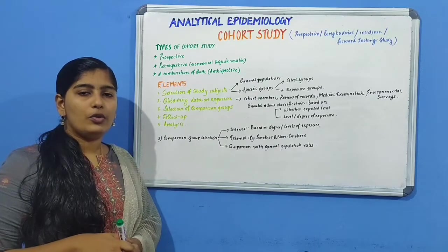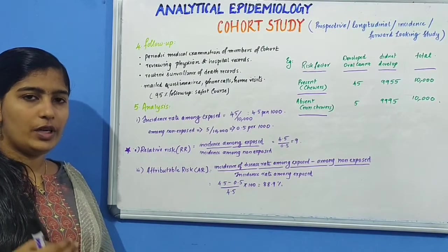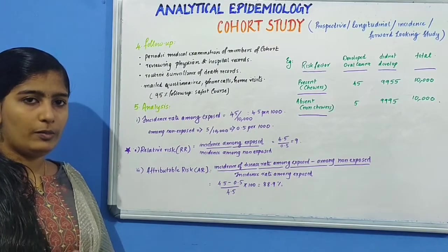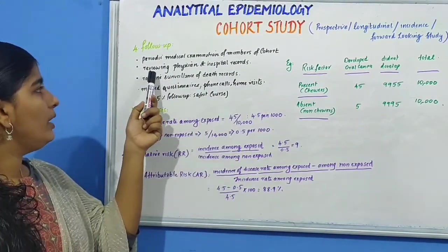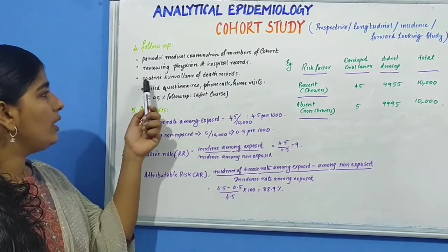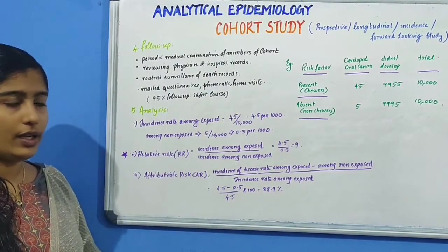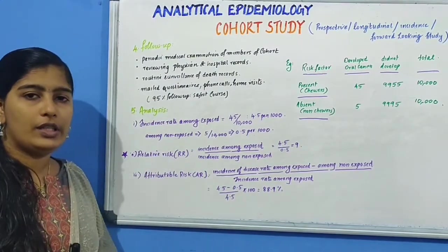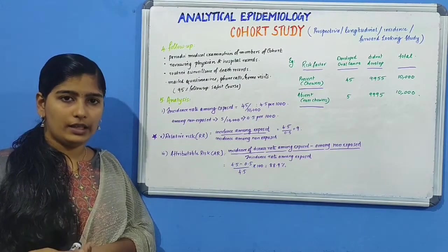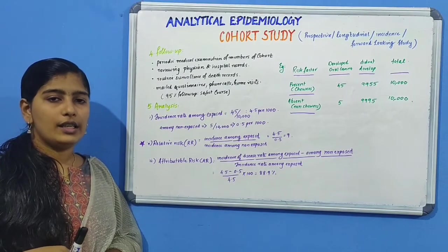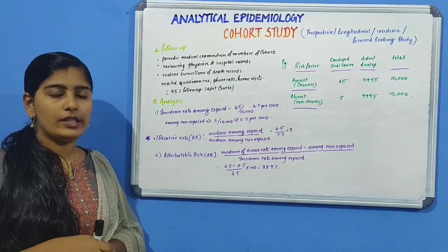The fourth element is follow-up. Since cohort study is prospective — moving from cause to effect — follow-up is required. Follow-up procedures include periodic medical examination of cohort members, reviewing physician and hospital records, routine surveillance of death records, mail questionnaires, phone calls, and frequent home visits. The safest course is 95% follow-up. Inevitable losses due to migration or death are referred to as attrition or loss to follow-up.